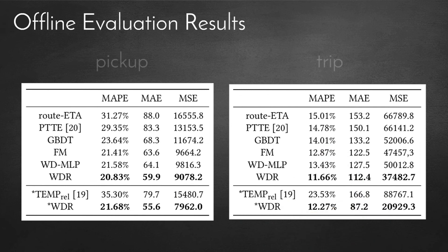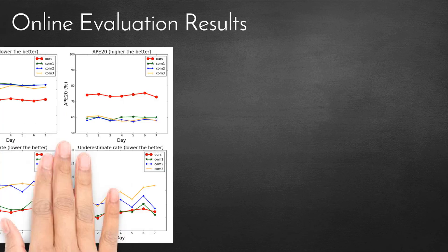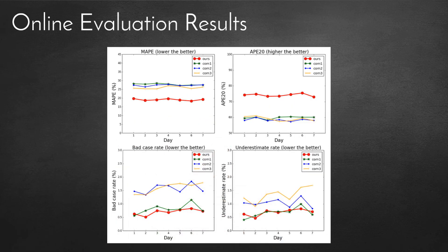We have two types of trajectories: pick-up and trip. Our WDR model outperforms the competing methods. Moreover, an online experiment further evaluates our model. Compared to three leading industrial MAPE services, the WDR model achieves state-of-the-art on all of the metrics.